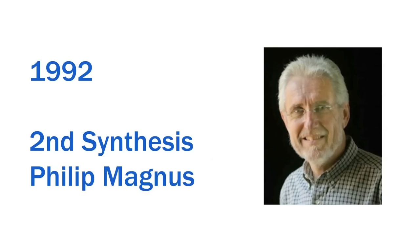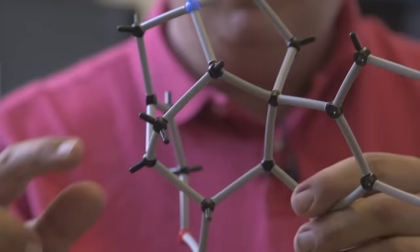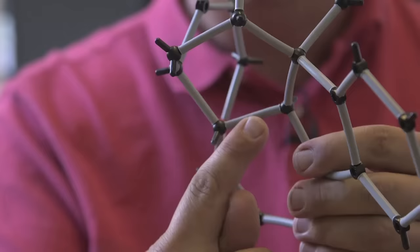The next synthesis was carried out in 1992, so it was many years later, by Philip Magnus. That was, again, 28 steps, but he got it up to 0.3% yield. It's considerably more efficient, about 1,000 times more efficient, but still a very low yield. In each case, all of these people were developing a new type of bond connecting reaction, and they were putting that into operation. So, Magnus, in his synthesis, was making this bond and this bond in the key step, using a Diels-Alder type of reaction.